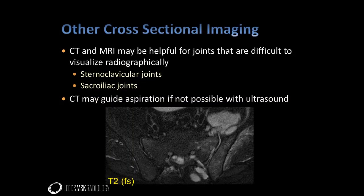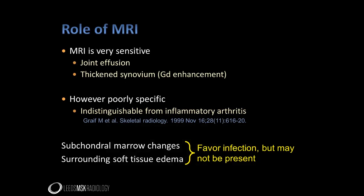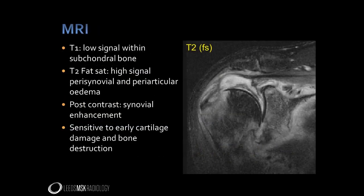CT and MRI can be very helpful when joints are difficult to visualise radiographically, such as the sternoclavicular and sacroiliac joints. This MRI study demonstrates septic arthritis in the left sacroiliac joint. CT is also helpful for guiding aspiration where a joint is not amenable to ultrasound guidance. MRI is very sensitive for the demonstration of joint infection; however, it is very non-specific and particularly poor at distinguishing joint sepsis from other causes of joint inflammation such as rheumatoid arthritis. The presence of subchondral marrow changes and surrounding soft tissue oedema favour infection, but may not be present. In septic arthritis, MRI typically shows subchondral oedema with low T1 signal and increased T2 signal, and we can also appreciate marked periarticular oedema and early erosive change in the bone.